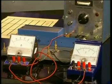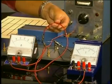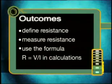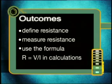Everything in an electric circuit has resistance, even these conducting wires. Today we will do an experiment to see how potential difference and current that passes through a resistor are related to each other. By the end of this lesson, you should be able to define resistance, measure resistance, and use the formula R is equal to V over I in calculations.